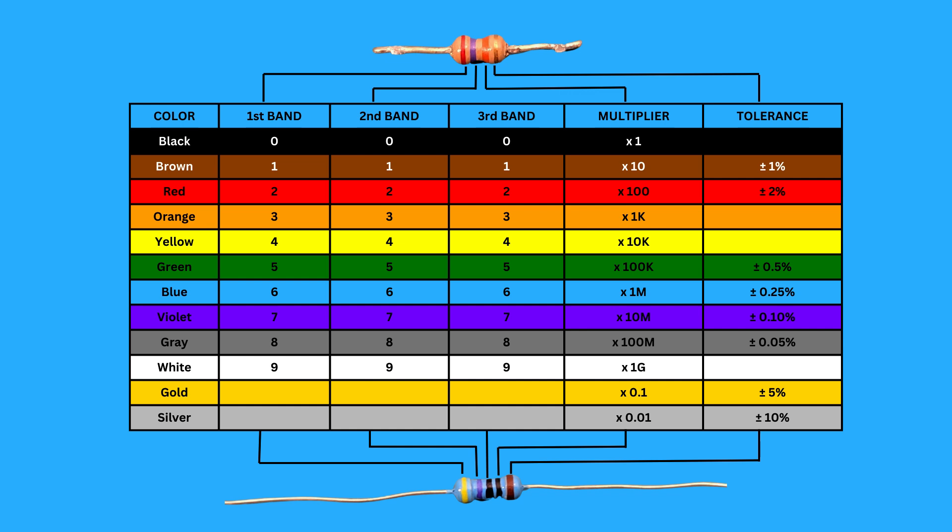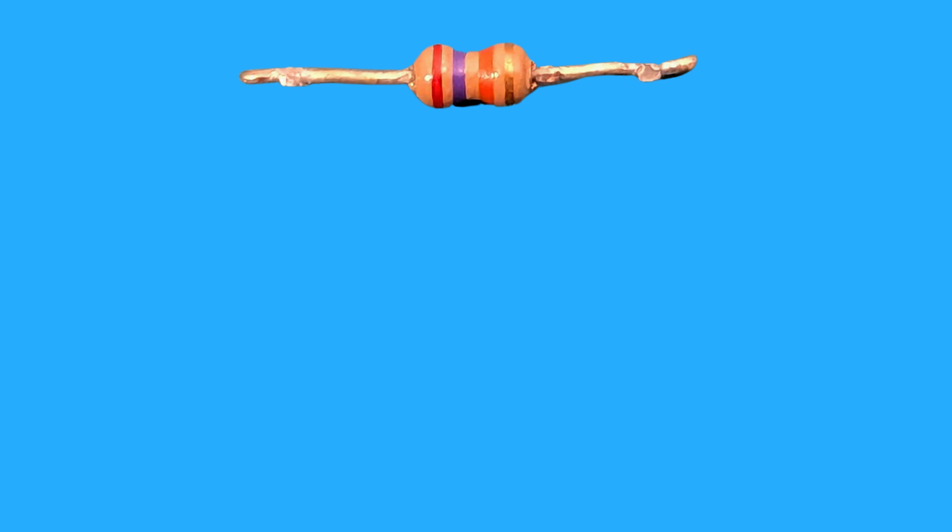Let's go through an example. Here's a resistor with four color bands. The first band has a red color. The second band has a violet color. The third band has an orange color. The fourth band has a gold color.